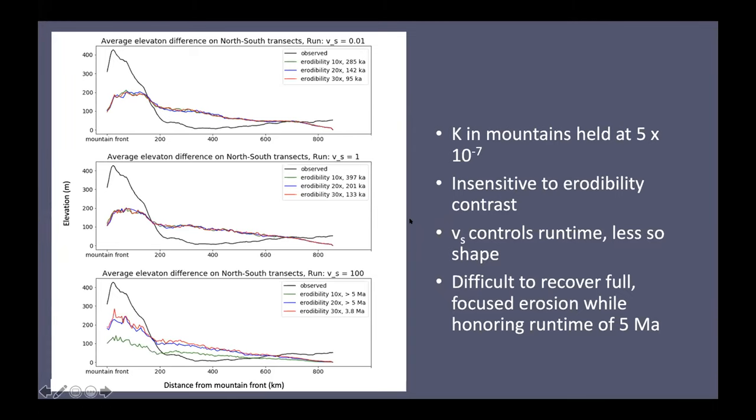What the grain size really does seem to control is the runtime of the models. So much so that when we move to this bottom plot, we see something that looks more promising for the erosive signal, but the runtime is exceeding 5 million years. So we're running for too long.